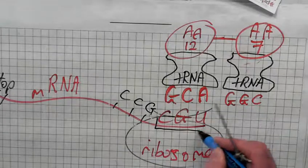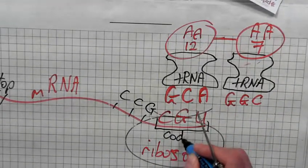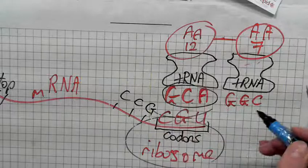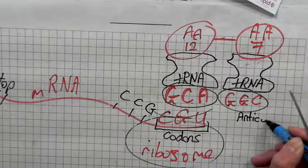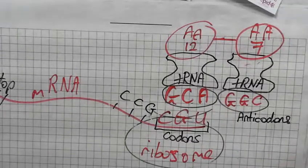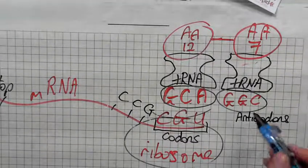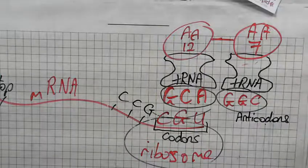We said this triplet, these are called codons. These ones are called anticodons. Anticodons. They're triplets. Anticodon triplets are found on tRNA. Alright?